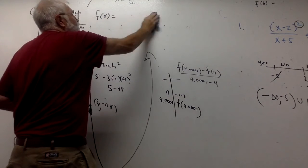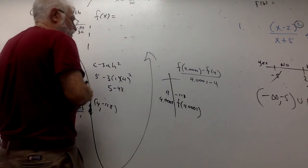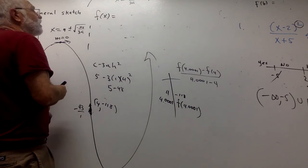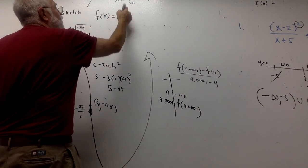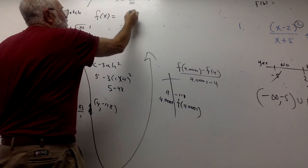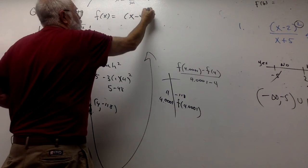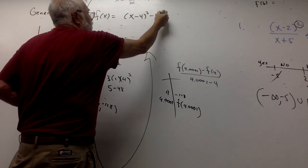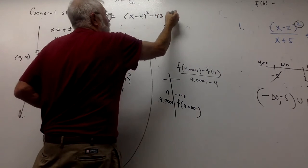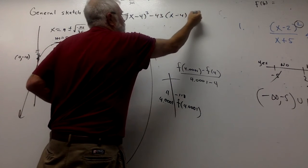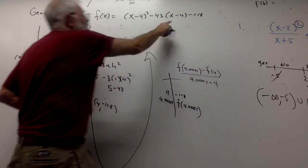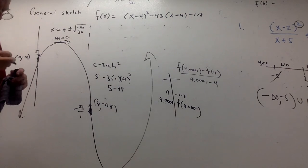This graphic stuff isn't out there. So that equation could have been written—I wish I hadn't erased it. That equation could have been written as the a term, which was one. So x minus 4 cubed, minus 43, x minus 4, minus 118. If you multiply that out, you should get the original equation.